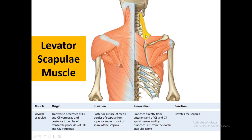The levator scapulae muscle, as the name suggests, helps elevate the scapula. Its origin is from the transverse processes of C1 and C2 vertebrae and the posterior tubercles of the transverse processes of C3 and C4. It inserts on the posterior surface of the medial border of the scapula from the superior angle to the root of the spine of the scapula. It is innervated by C3 and C4 anterior rami and the dorsal scapular nerve, and its function is to elevate the scapula.